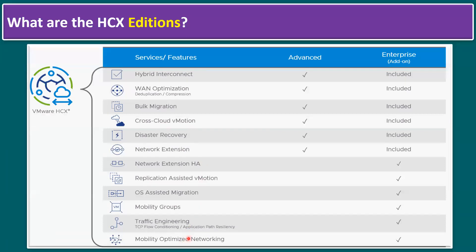The Enterprise edition includes all Advanced features plus additional capabilities: network extension high availability with dual networks so migration continues if one network goes down; replication-assisted vMotion — live bulk migration with zero downtime; OS-assisted migration for non-vSphere workloads; mobility groups for logical grouping of VMs; traffic engineering with TCP flow conditioning and application path resiliency; and mobility-optimized networking with automated route management as VMs migrate from source to destination.